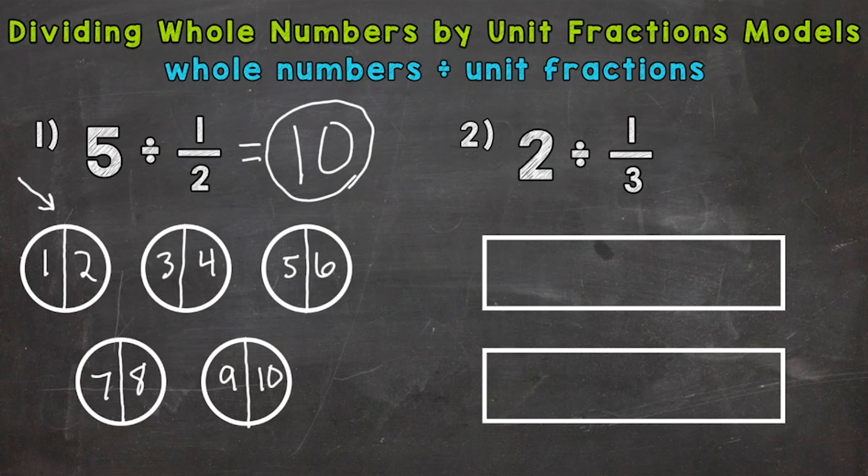So on to number two, where we have two wholes divided by one third. So we have our two wholes here. We did rectangles for number two. And we need to divide each of those by one third. So into thirds, into thirds.